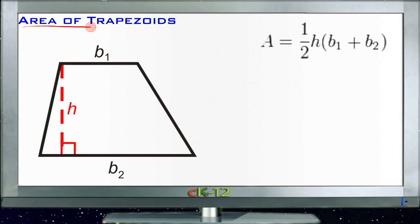The area of a trapezoid, kind of like the area of a parallelogram, looks a little bit daunting at first, and that's because the shape is really kind of wiggy.